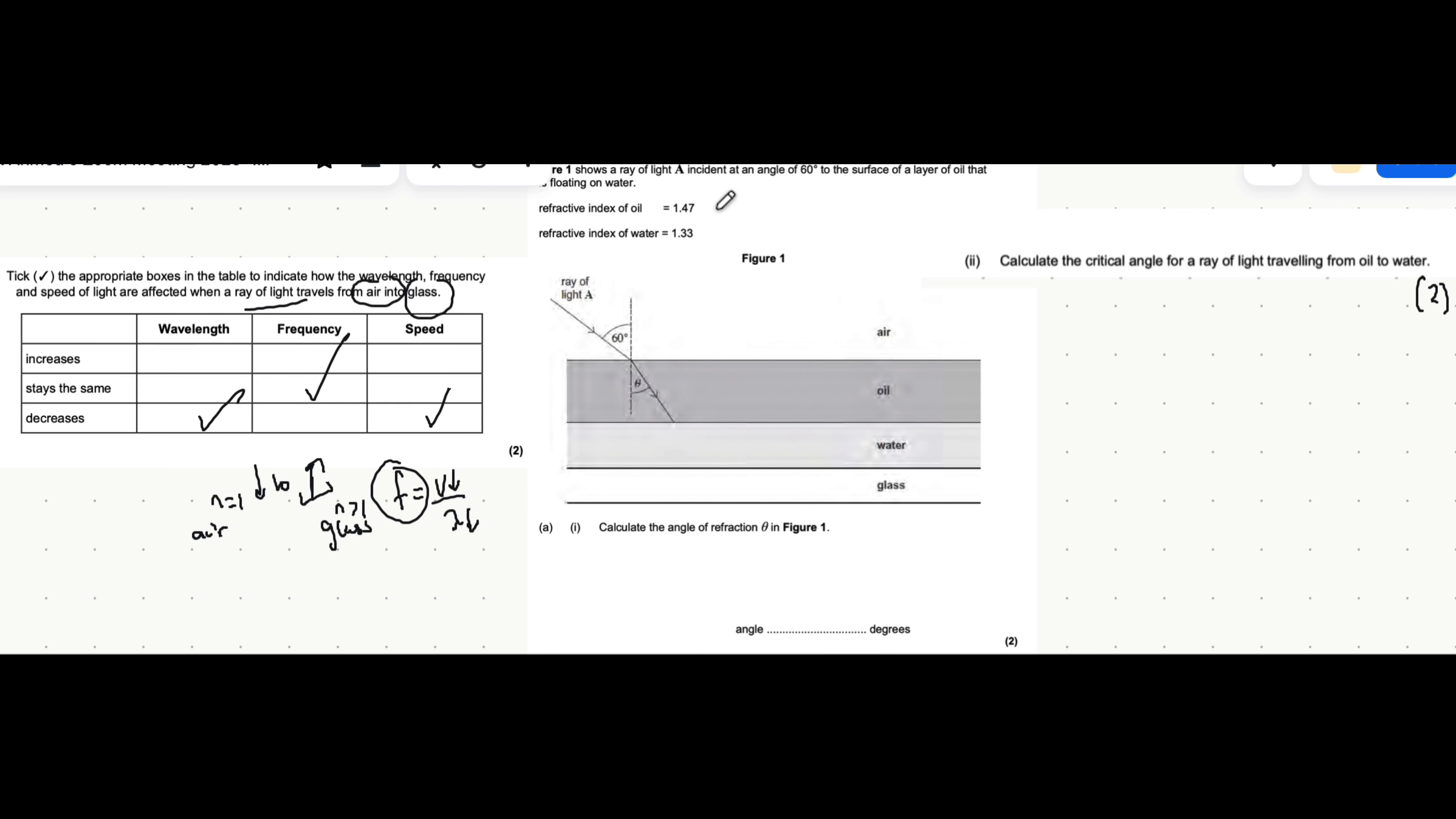So that's the first part of the question. Here, light is travelling from air to oil to glass. It says the refractive index of oil is 1.47. Again, we assume the refractive index of air is just 1. The refractive index of water is 1.33. And it says calculate the angle of refraction. Well, refraction is taking place between air and oil. And we're going to use Snell's law here. So I'm just going to quickly write this out. And this specific equation is actually given to you in an exam.